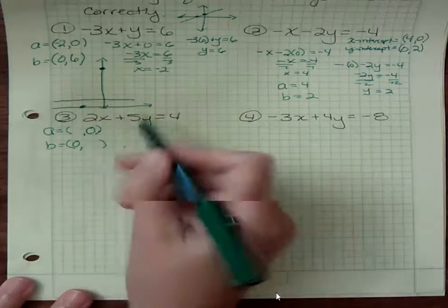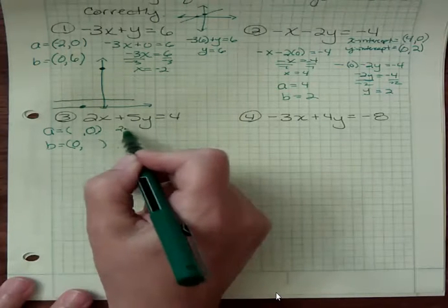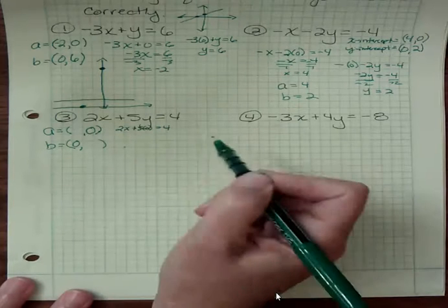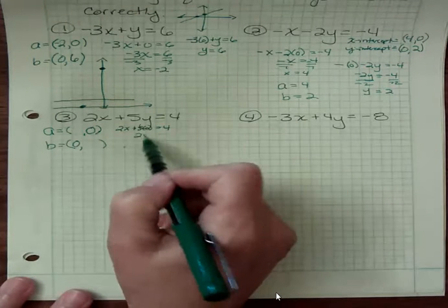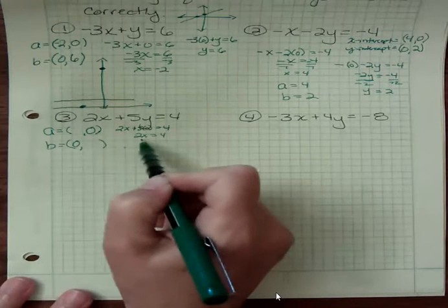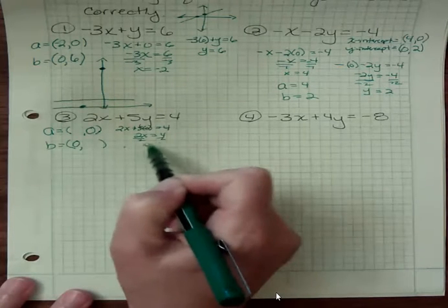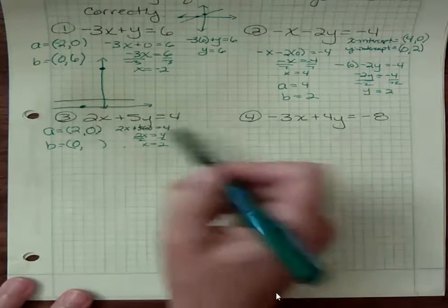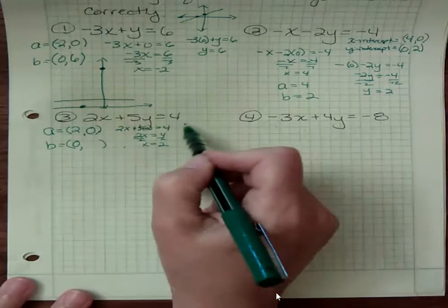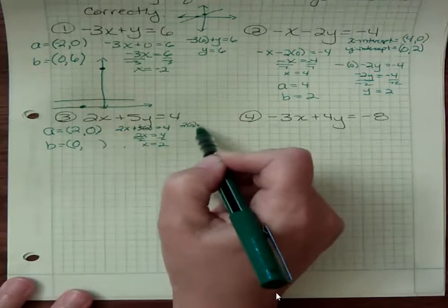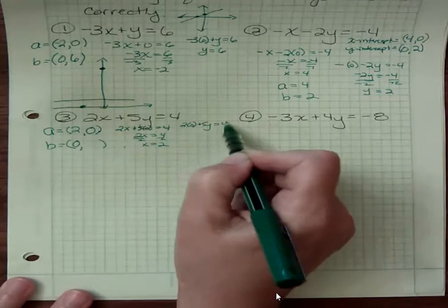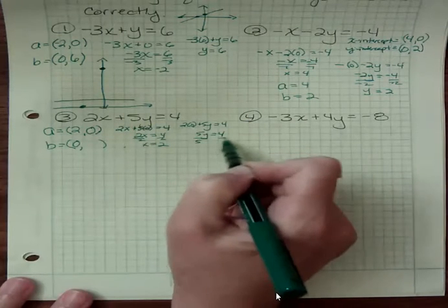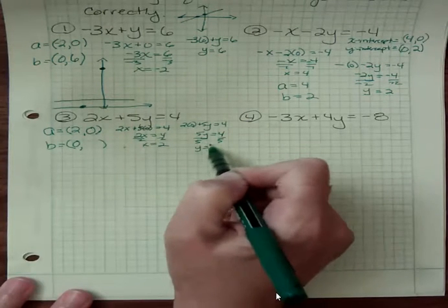What if y was zero? Well, I'd have two x plus five times zero equals four, or two x equals four, or x equals two. That one came out nicely. But my other one, if I have x be zero, then I have two times zero plus five y equals four. And if I divide both sides by five, I get y equals four fifths.